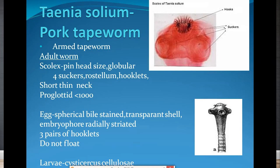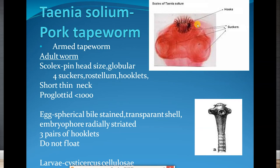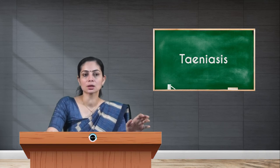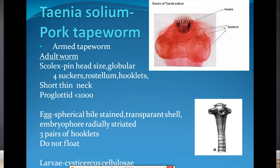Coming to the next species, Taenia solium, which is slightly different in morphological forms and infection. This parasite is named the pork tapeworm and is called the armed tapeworm of man. Why armed? Because the scolex has a separate structure called the rostellum, which is missing in Taenia saginata — making Taenia saginata the unarmed tapeworm. The scolex also has four suckers, a rostellum, and hooklets; it is pinhead-sized and globular. The neck is thinner and shorter than Taenia saginata, and the number of proglottids is lesser — usually less than 1000. The egg is the same as Taenia saginata, with a spherical bile-stained egg with three pairs of hooklets inside. The larval stage is named Cysticercus cellulosae, which is also infective for human beings.